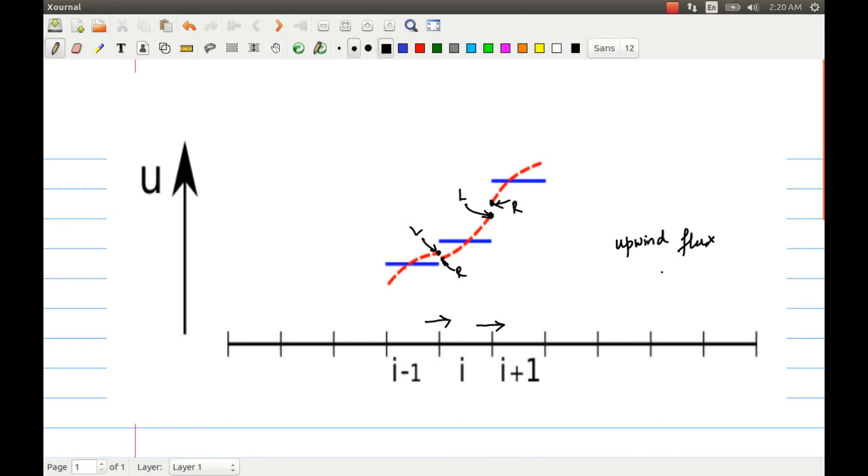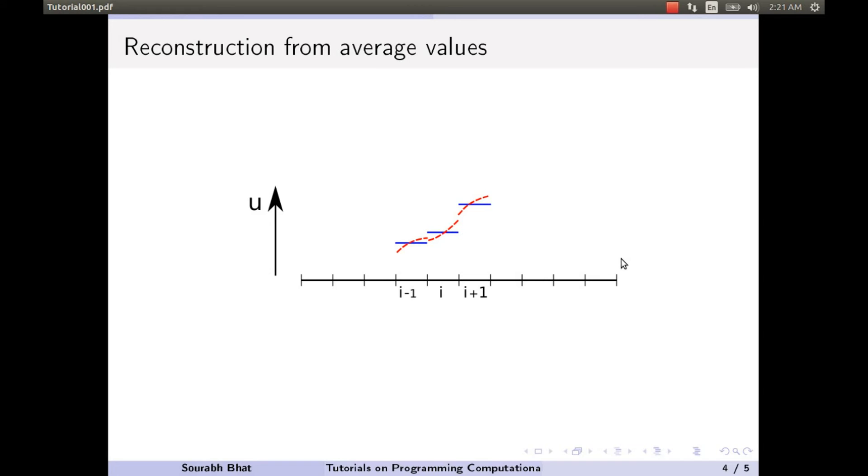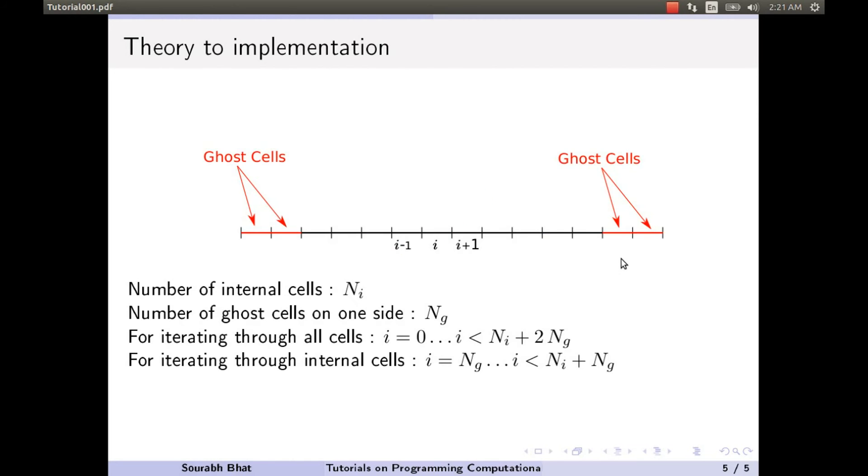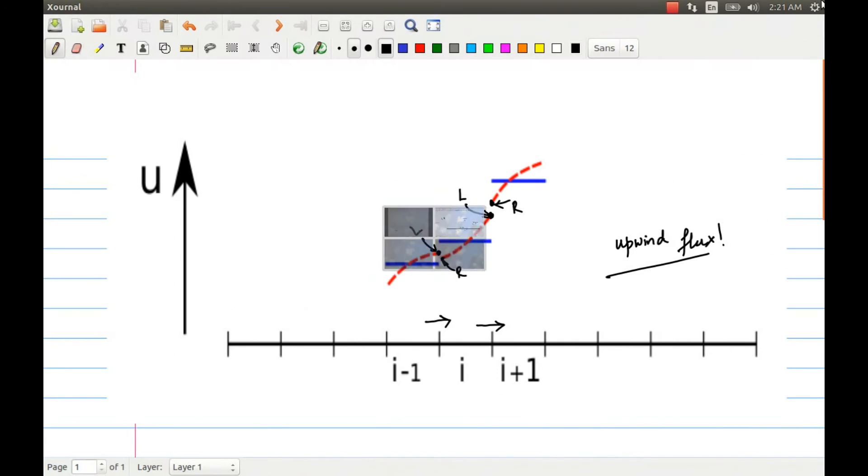This particular way of finding the flux is called upwind flux. We'll be using upwind flux in our calculations. And it is known to be stable if we use upwind flux. Once we have calculated the flux using upwind, we can continue. I'll go to the previous slide.